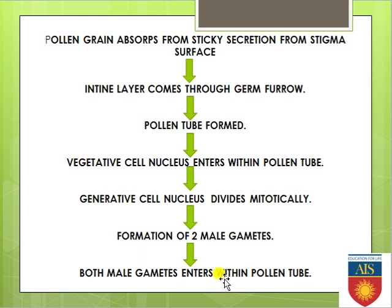Those two haploid male gametes then start entering within the pollen tube by following the vegetative cell nucleus. So: vegetative and generative cells are first separated by the callose wall, then when the pollen tube forms, the vegetative cell nucleus enters first, followed by the two male gametes. The reason the vegetative cell enters first is that it provides nourishment to the male gametes, so it must move first, and then the two male gametes follow it into the pollen tube.